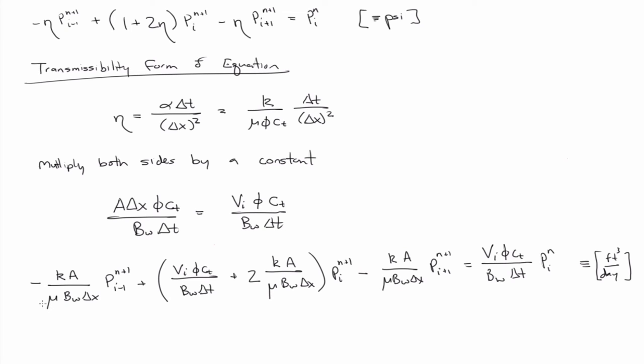So if you look at this term, it sort of looks like Darcy's Law. This term, or specifically the coefficient here, has to do with the transmissibility. It refers to how much fluid flows in or out of a grid block.